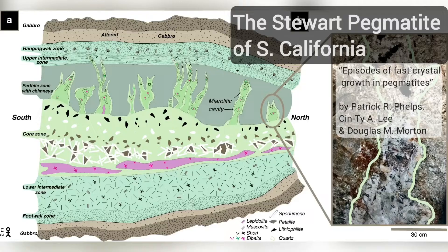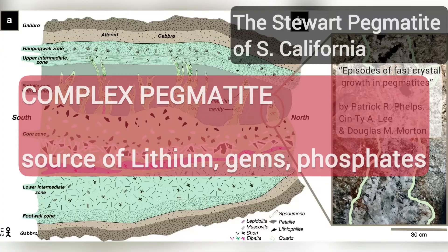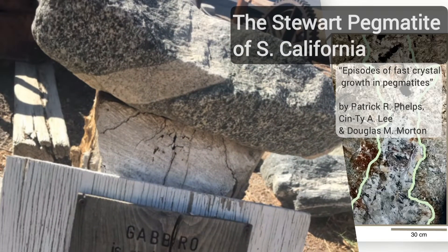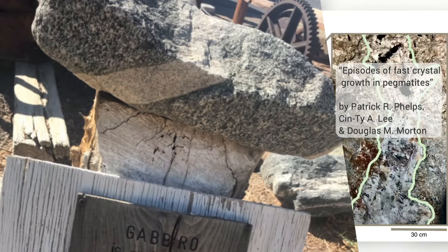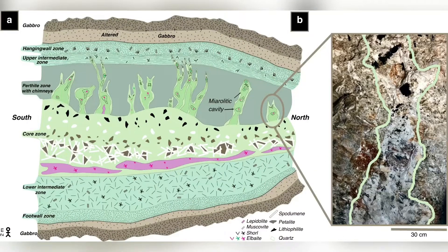Among the many interesting pegmatites in California, the Stuart Pegmatite offers great examples of how pegmatites form and the different types you can find. The Stuart Pegmatite is located in San Diego County and is best known as a source of lithium and gem-quality minerals, as well as rare phosphate minerals. The pegmatite dike is found enclosed within gabbroic material — rocks with a composition of stronger ferromagnesian content.